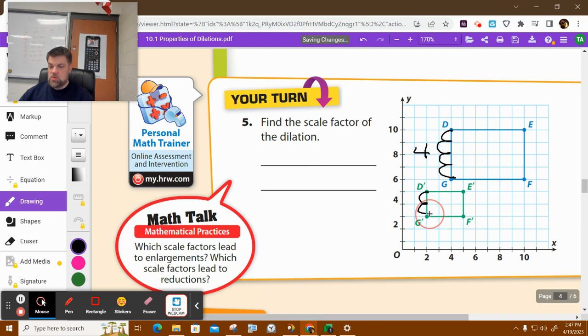D prime to G prime is just 1, 2. Now I'm going to do D to E, 1, 2, 3, 4, 5, 6. And then I bet you this is 3. 1, 2, 3. So here's the thing.